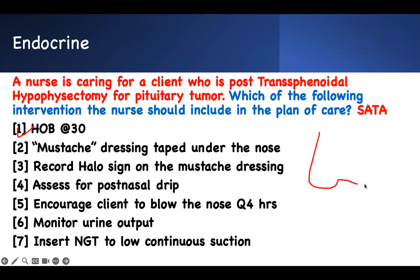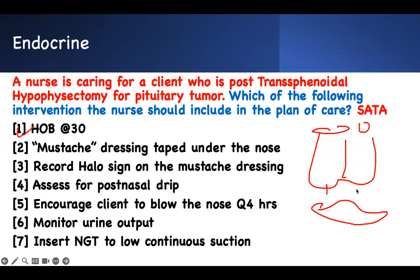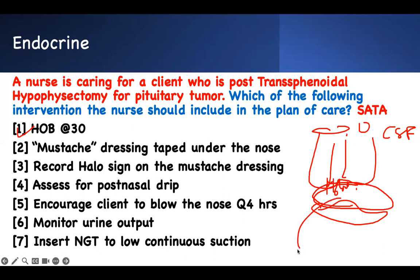When they operated, people are bleeding. But what you worry about is whether cerebrospinal fluid (CSF) is also leaking. To tell if it's just blood or CSF, you place a gauze under the nose — that's called a mustache dressing. The leakage collects there and you observe it.